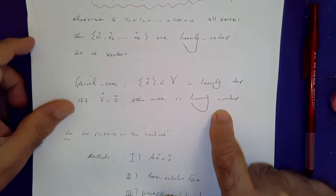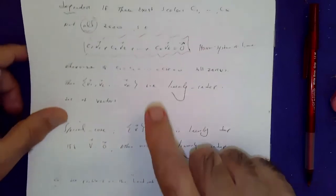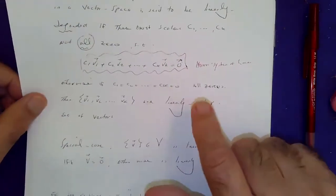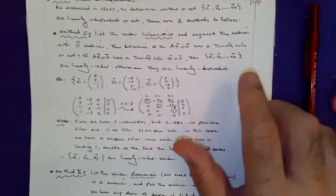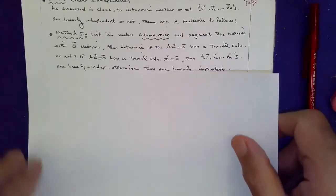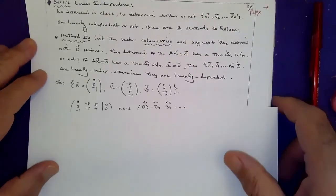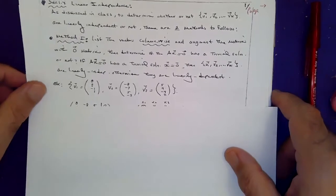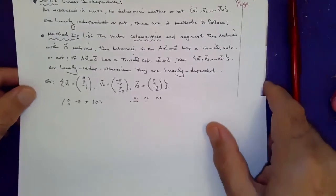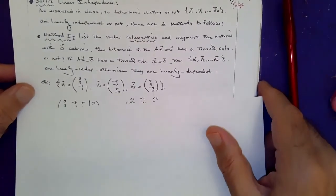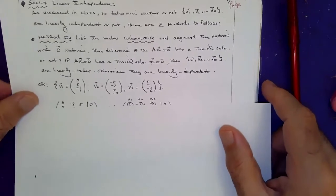So question is, how do you determine the dependency and independency of a bunch of vectors? Well, turns out there are two ways to do this. I'm going to show you both ways and you see which way you like.